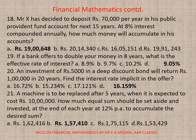Question 20: An investment of rupees 5,000 in a deep discount bond will return rupees — well — in 20 years. Find the interest rate implicit in the offer. The correct option is D — 16.159%.